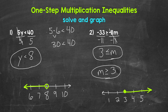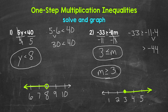Let's check a solution to make sure we are correct. We can plug in anything greater than or equal to three for M. Let's use four: negative 33 is greater than or equal to negative 11 times four. Negative 11 times four gives us negative 44, so negative 33 is greater than or equal to negative 44 — that is true. Let's also check three: negative 11 times three gives us negative 33, and negative 33 is greater than or equal to negative 33 — that is also true. Three works as well.